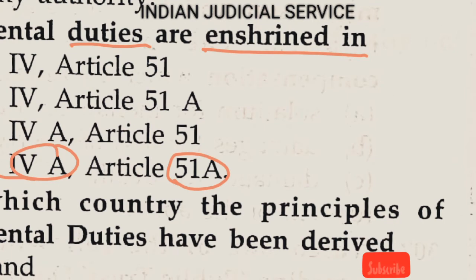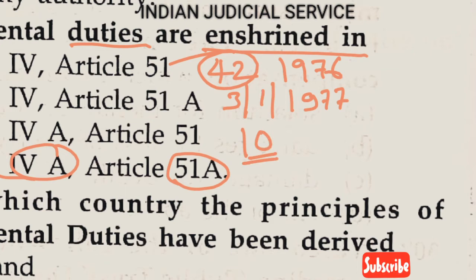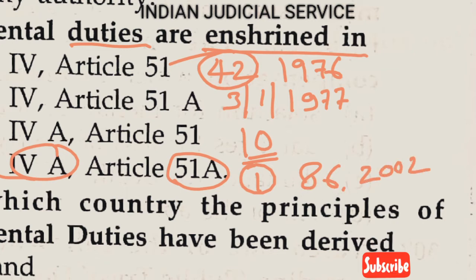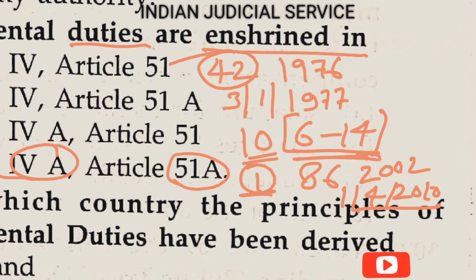Fundamental Duties were embodied in our constitution by the 42nd Constitutional Amendment in 1976, enforced from 3rd January 1977. By the 42nd amendment, 10 Fundamental Duties were added in Part 4A. Later, one more Fundamental Duty was added by the 86th Amendment in 2002, which came into force on 1st April 2010. This 11th duty requires parents to provide education to their children between ages 6 to 14 years.